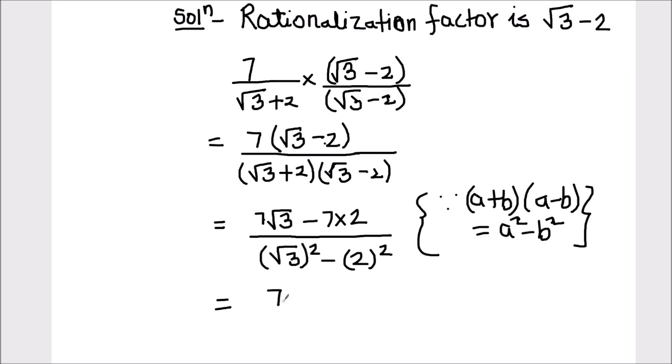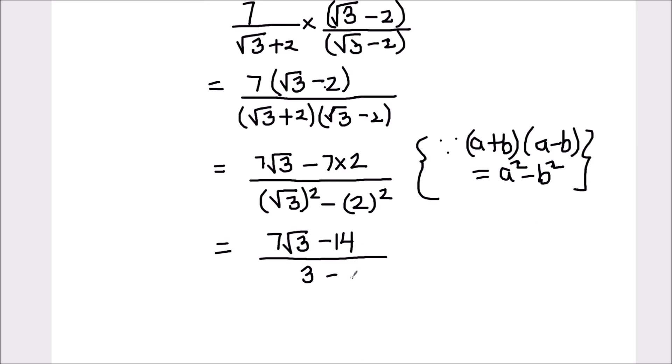Solving it further, this is going to be 7 root 3 minus 7 times 2 is 14. Root 3 square is 3 minus 2 square is 4. So, that's 7 root 3 minus 14 divided by 3 minus 4, which is negative 1.